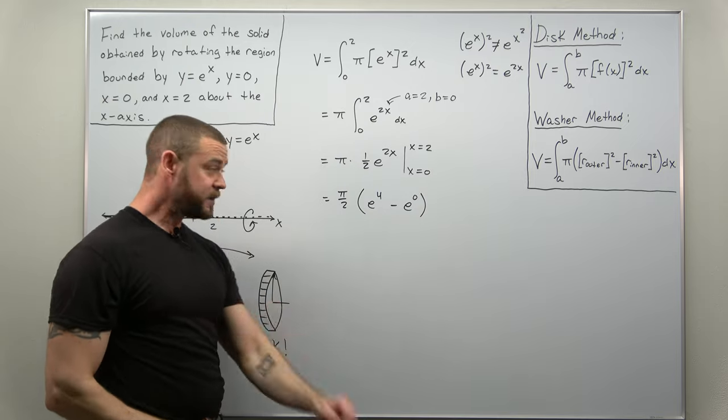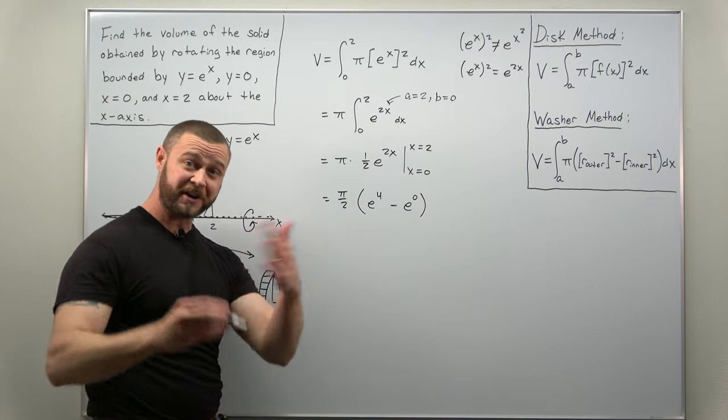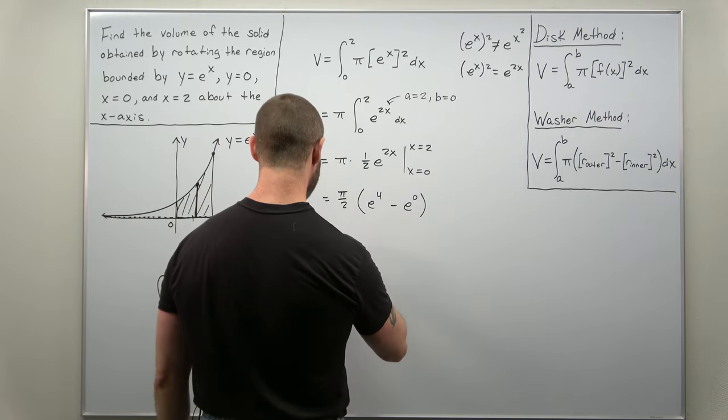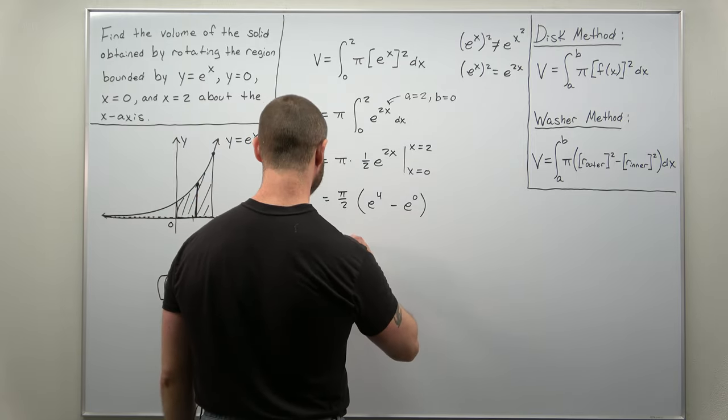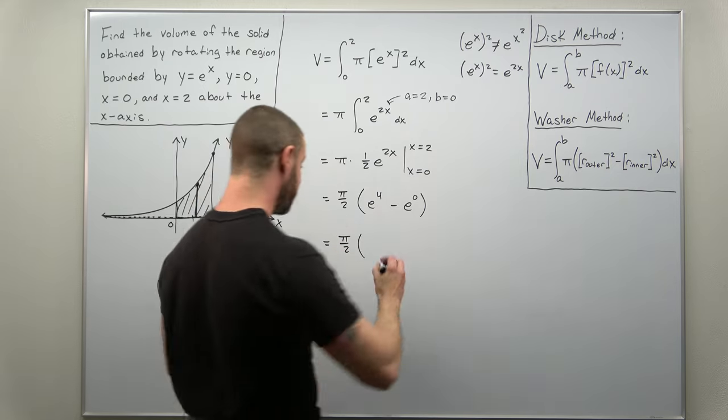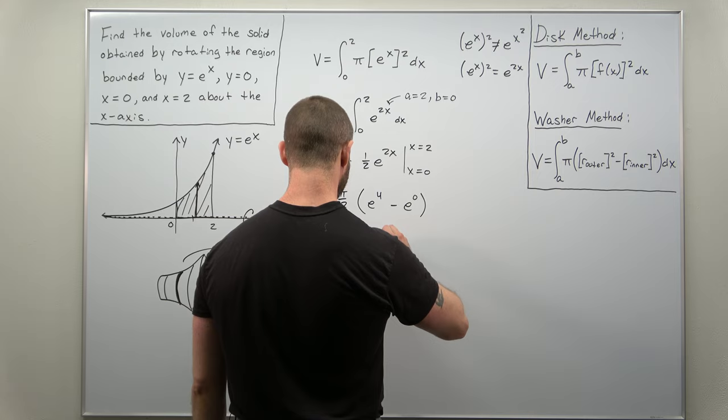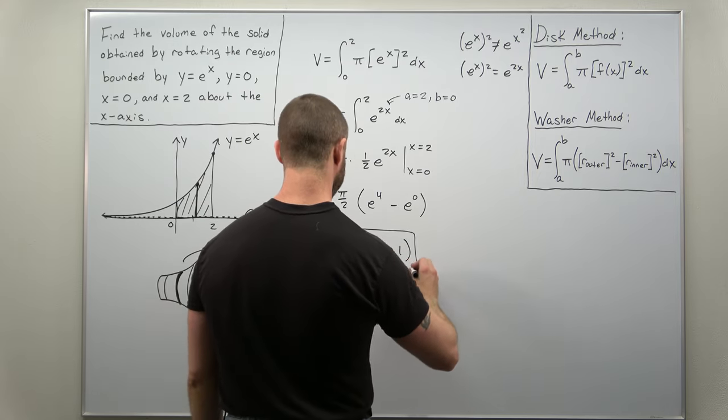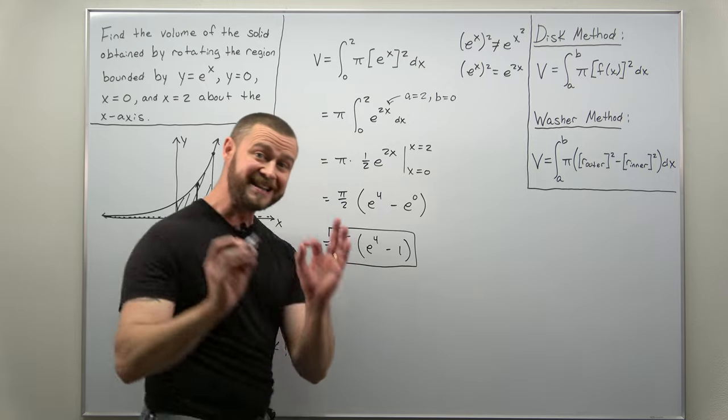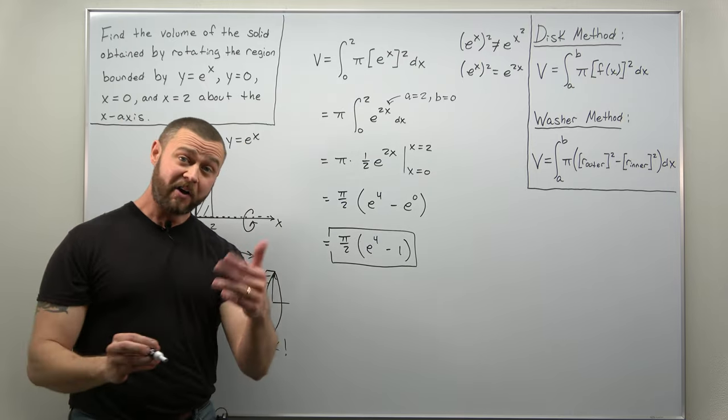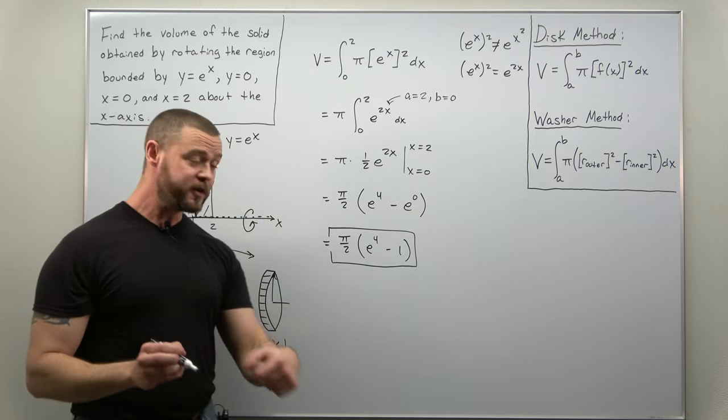And I have no idea what e to the 4th power is, your calculator will give you that, but e to the 0, that's 1. So it looks like we get as our simplified final answer here pi over 2 times e to the 4 minus 1. And that is a nice exact value. If you want to, you can plug that into your calculator to get an approximate decimal value, but that's the exact volume here.